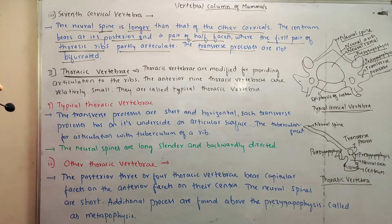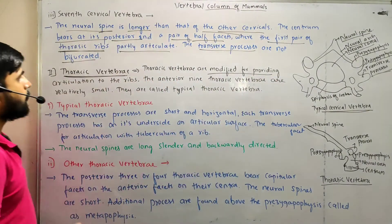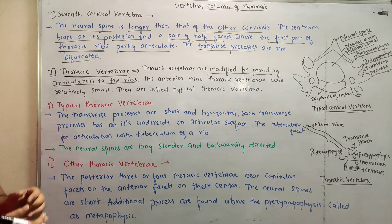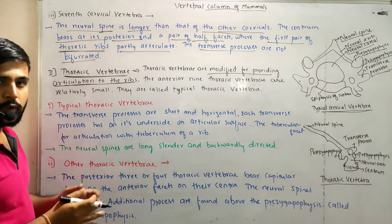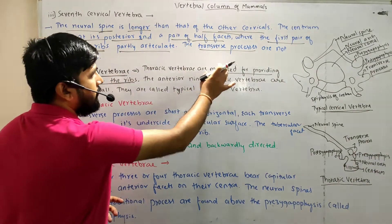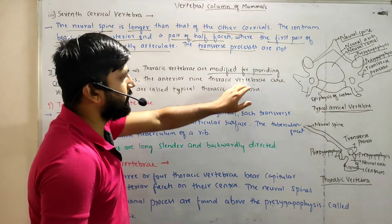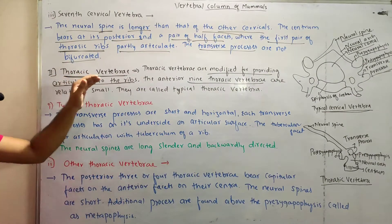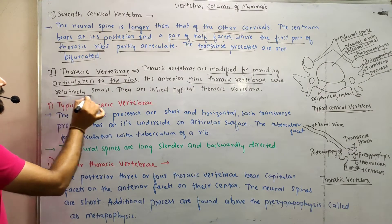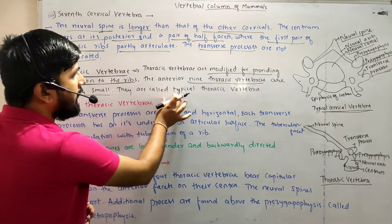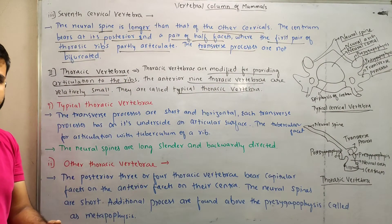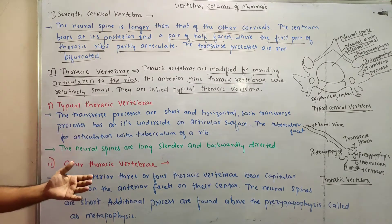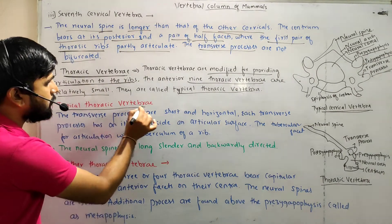The second region of the vertebral column is the thoracic vertebrae. Thoracic vertebrae are modified for providing articulation to the ribs. The anterior 9 thoracic vertebrae are relatively small and are called the typical thoracic vertebrae.